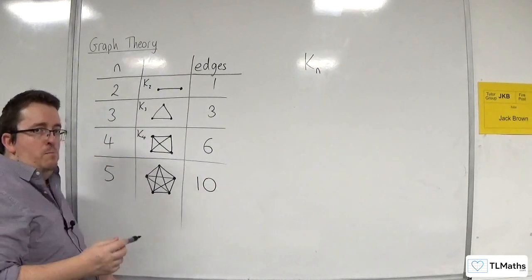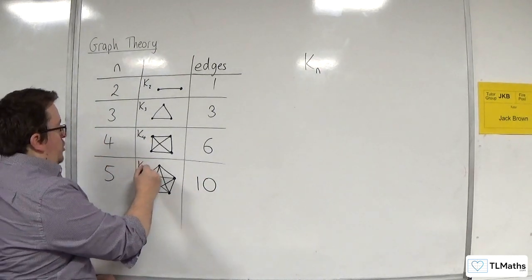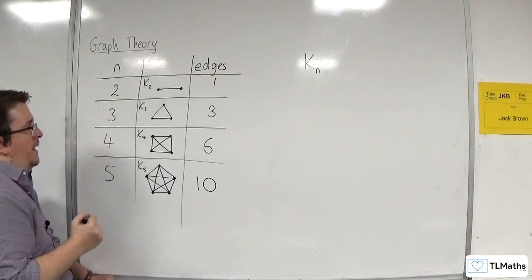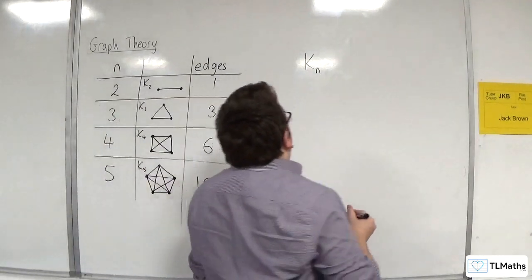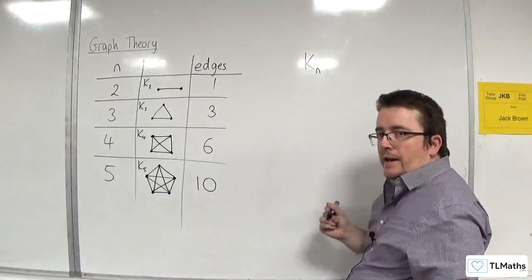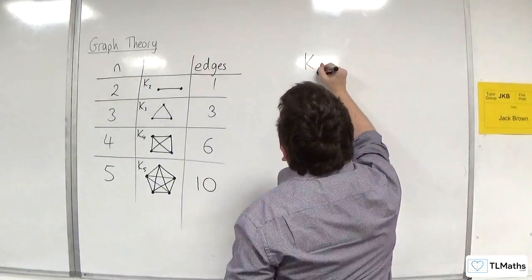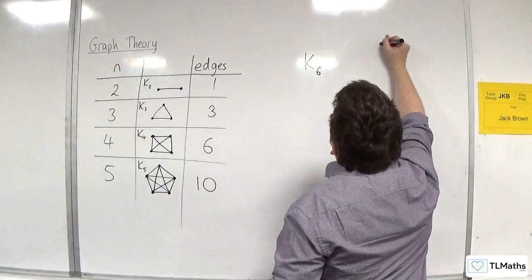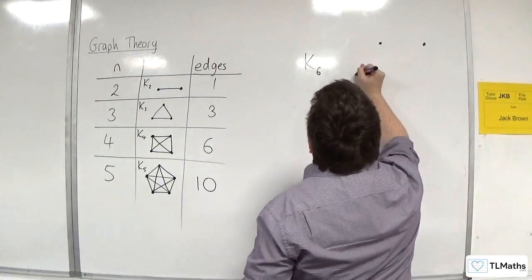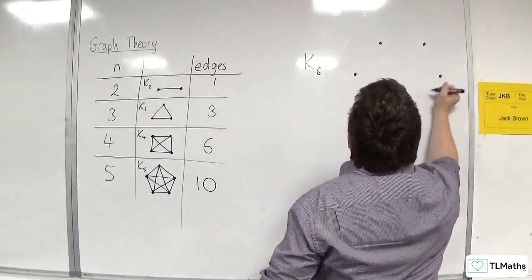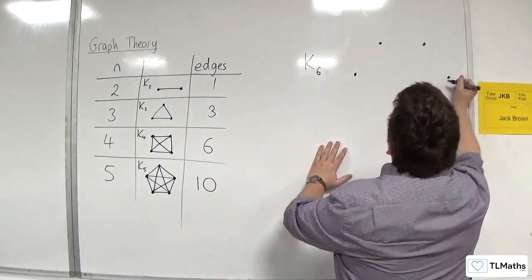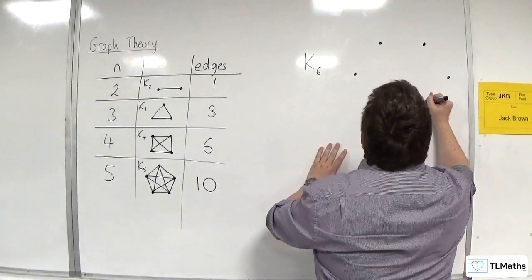So, with this one, you might have spotted the construction that I went through. So, let's try K6. Now, you might want to have a guess about how many edges this one's going to be. So, what would K6 look like? So, 1, 2, 3, 4. Let's try and draw it relatively symmetric. 5, 6.